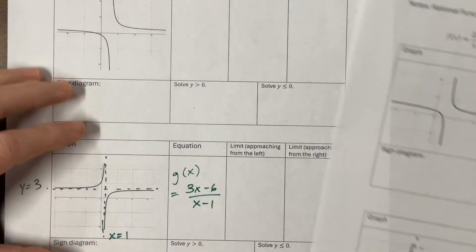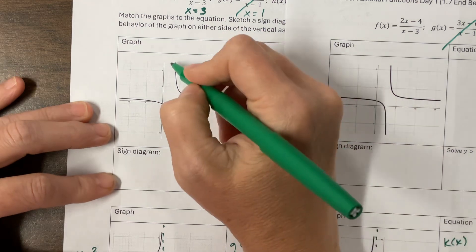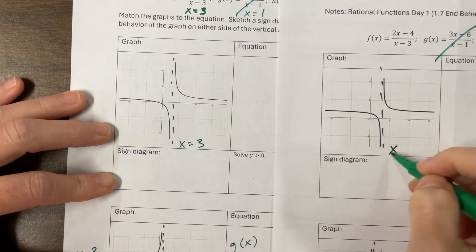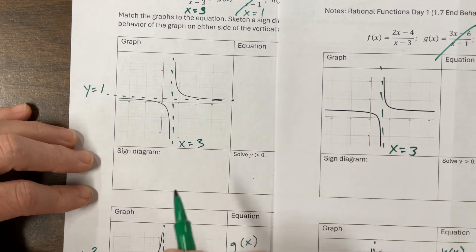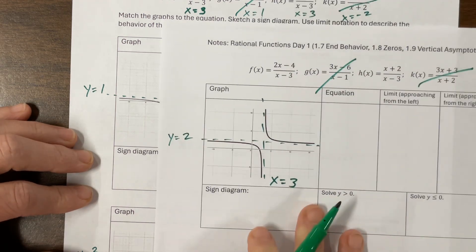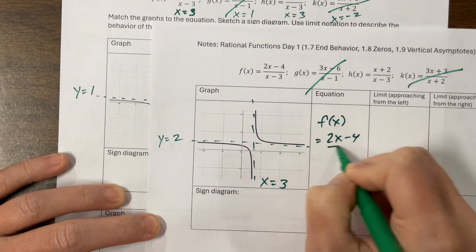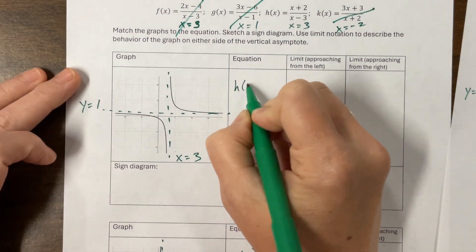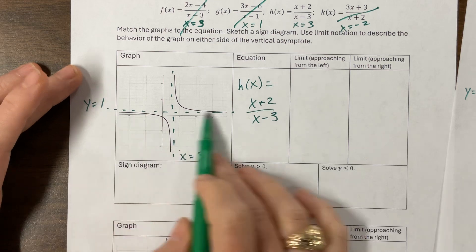The other two both have an asymptote of x equals 3. It looks to me like this line is lower, so this looks like a y equals 1. And this looks like it's a little higher — y equals 2. My other two equations are these: this one has a horizontal asymptote, so this is f of x, which is equal to 2x minus 4 over x minus 3. And that makes this one my h of x, which is x plus 2 over x minus 3, because when you divide the leading coefficients you get 1, and this looks like a y equals 1.